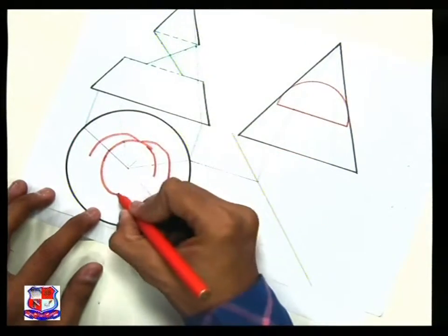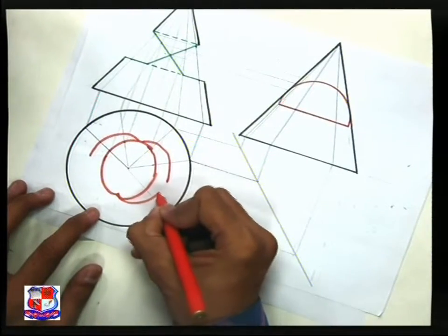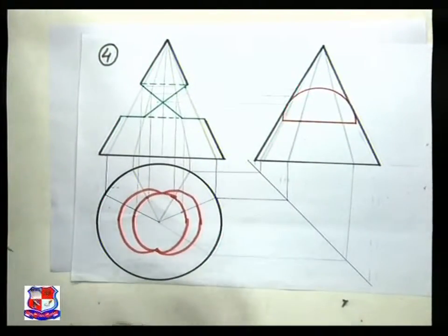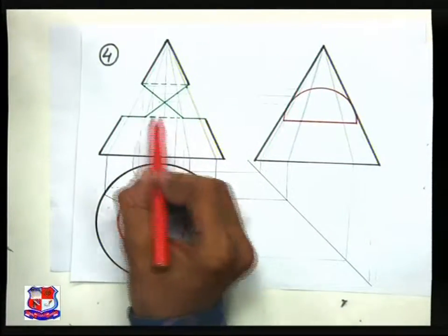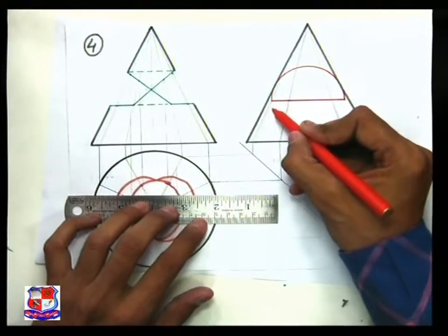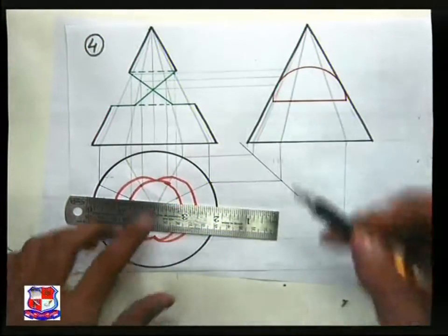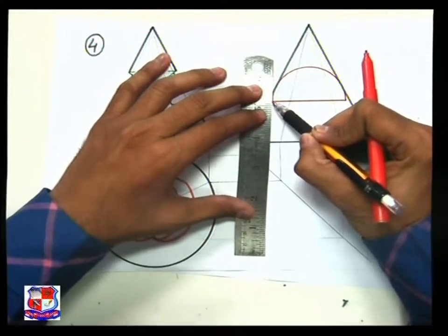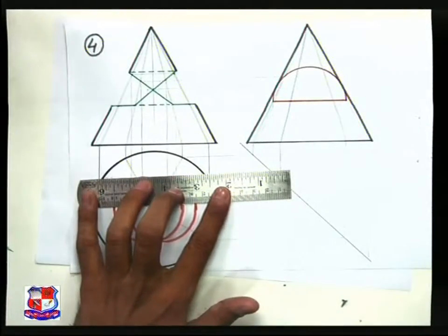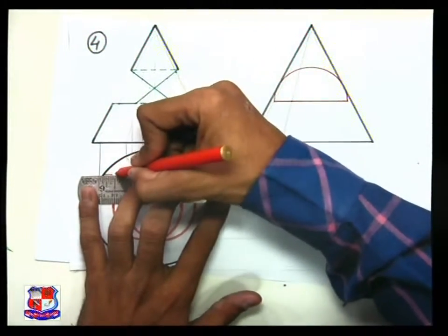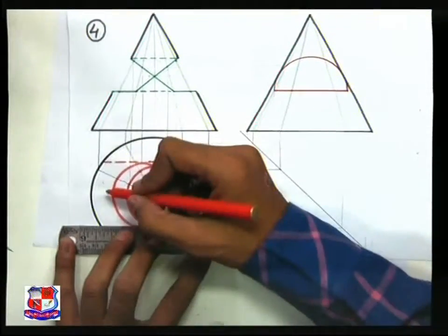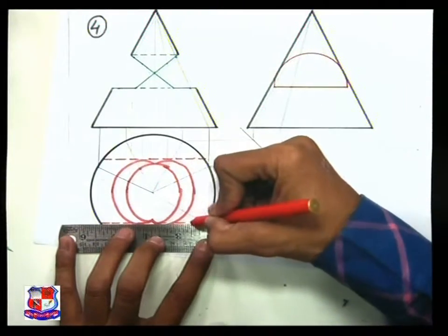Join all these points with a smooth curve — this would be the curve on one side and this would be the curve on the other side. On the other side it would be a mirror image of the drawn points. Transfer the end points to the top view via the meter line to represent the cut portion. The edge at the cut would not be visible, so represent it with a dotted horizontal line inside the circle. Similarly on the other side, that edge will not be visible — join them with straight dotted lines.